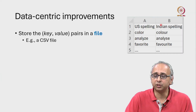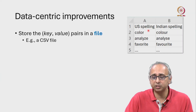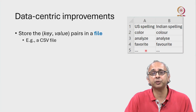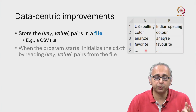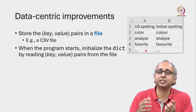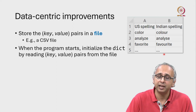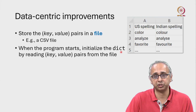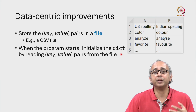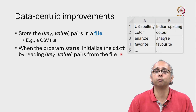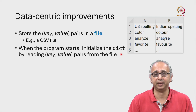You could have two columns — the US spelling and the Indian spelling — and you could keep these in any order you like; they don't have to be sorted in dictionary order. What we're going to do is when our program starts, we're going to take all these key-value pairs from the file and use them to initialize our dictionary. Then, once our dictionary is set up, we can look up the spellings of words as they come along.